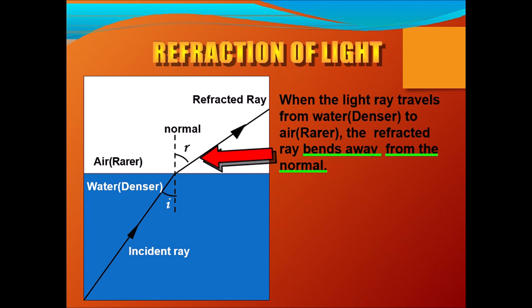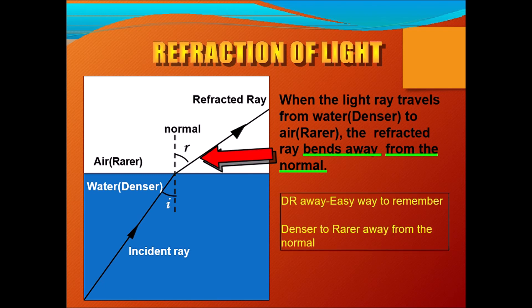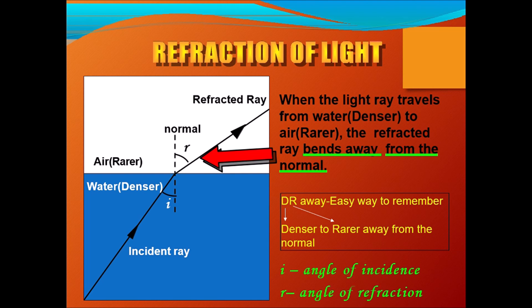How to remember this? Easy — we all know doctors, and we visit doctors only when we are very sick; otherwise we want the doctor to be away from us. So: Doctor Away — D stands for denser, R stands for rarer — denser to rarer, away from the normal. If you reverse it, rarer to denser, it will bend towards the normal. Simple to remember: Doctor Away — denser to rarer, away from the normal.